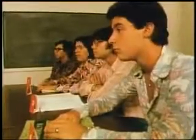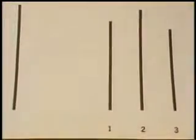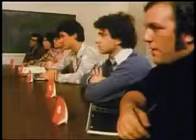One subject says: "They must be right — there are four of them and one of me." This subject's yielding is based on a distortion of his judgment. He genuinely believes that the group is correct.